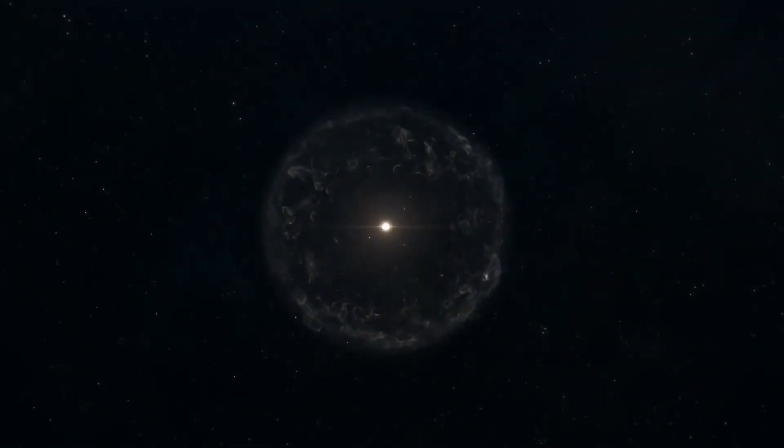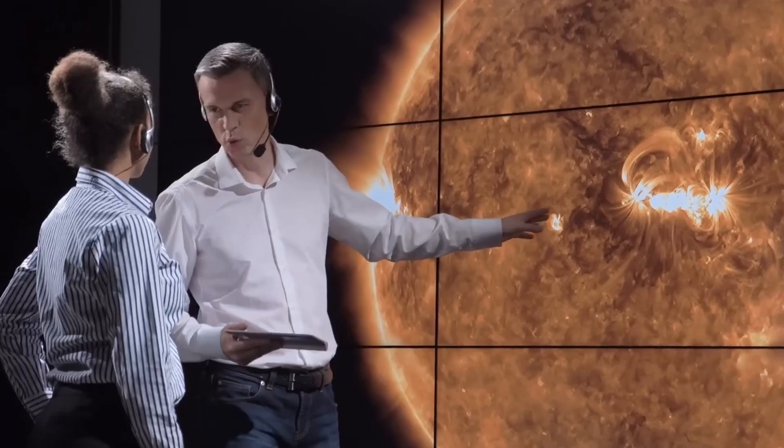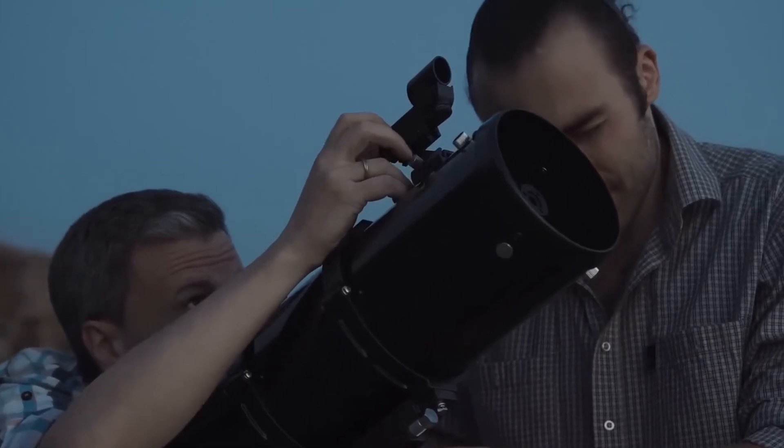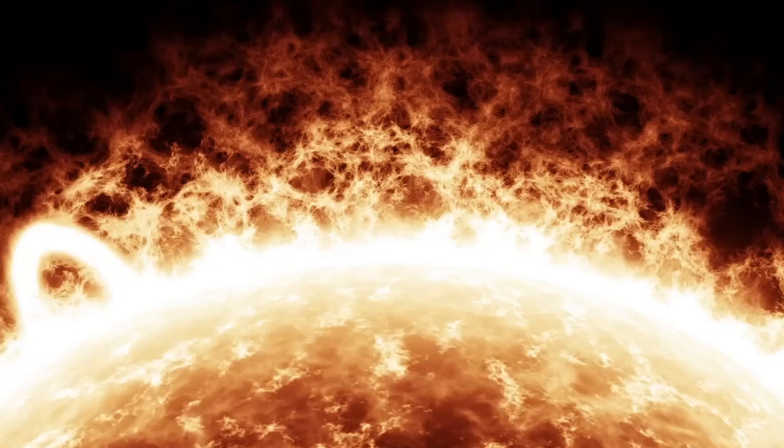During the day, the explosion of Betelgeuse would dramatically change the brightness of the sky. Although the sun dominates the sky, the supernova would be so bright that it would be visible even in daylight. The brightness would briefly blind drivers and pilots, similar to a sudden flash of lightning.